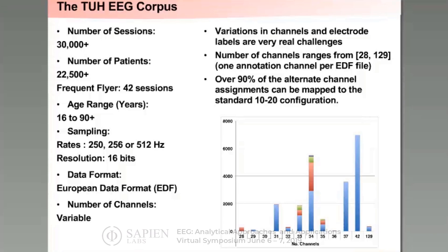The varying sampling rates are a bit annoying because you have to resample the data. For our research experiments, we resample everything to 250 Hz — there doesn't seem to be much benefit to going up higher in frequency. On occasion we've released resampled versions of the data to people, but the process of resampling is not that difficult with a lot of the tools that exist today.